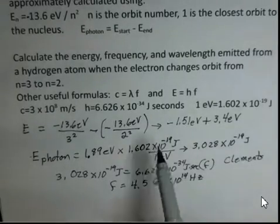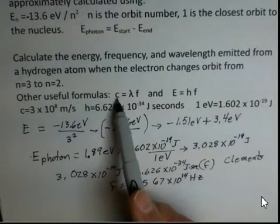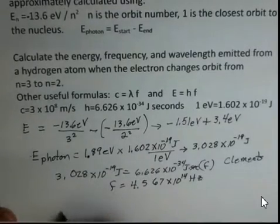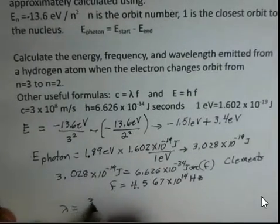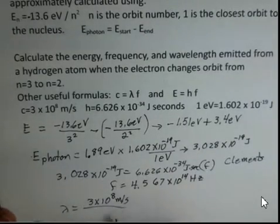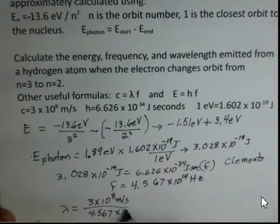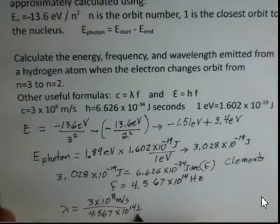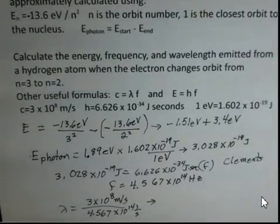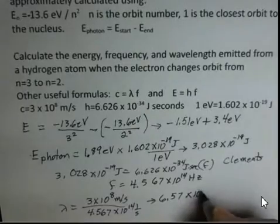Now it's time for our wavelength. And for the wavelength, we're going to divide both sides by frequency. So speed of light divided by frequency will equal the wavelength. So for the wavelength, the speed of light is 3 times 10 to the eighth meters per second. I divide by frequency, 4.567 times 10 to the 14th. One over seconds. So the seconds units cancel.